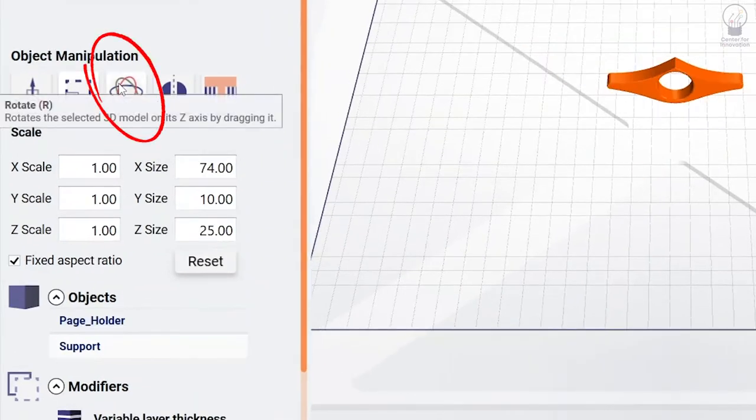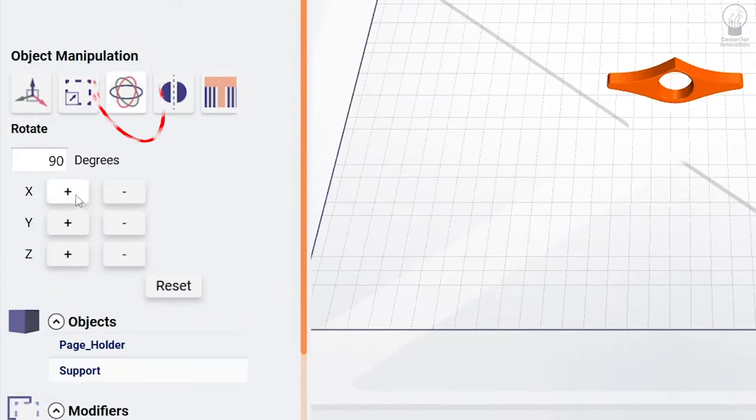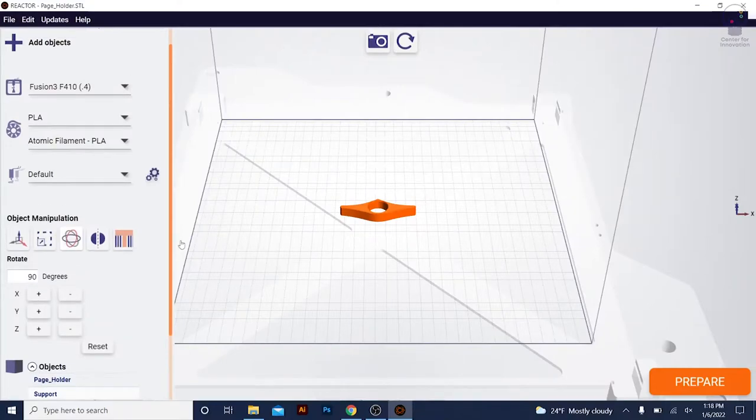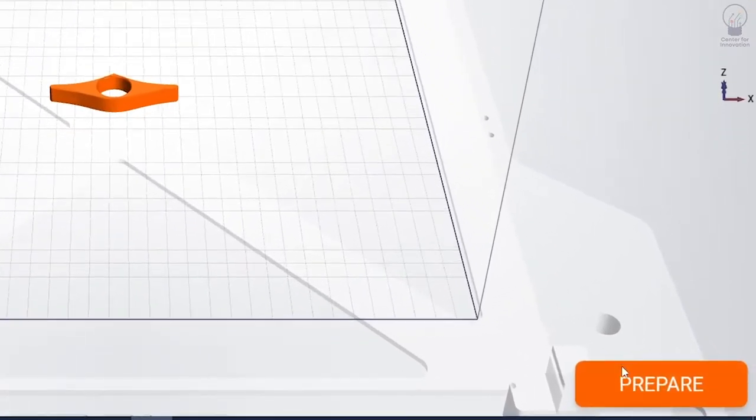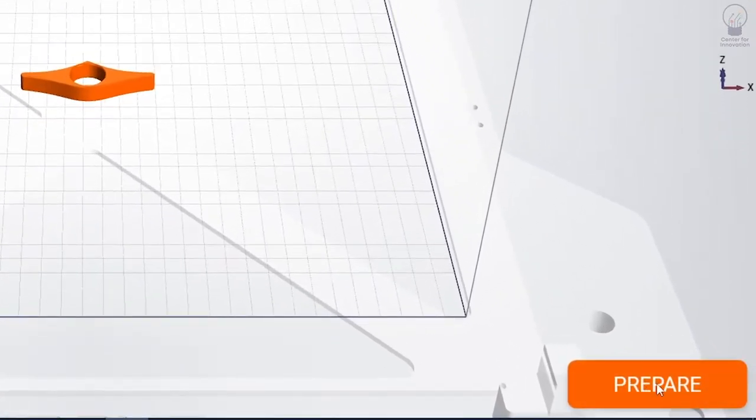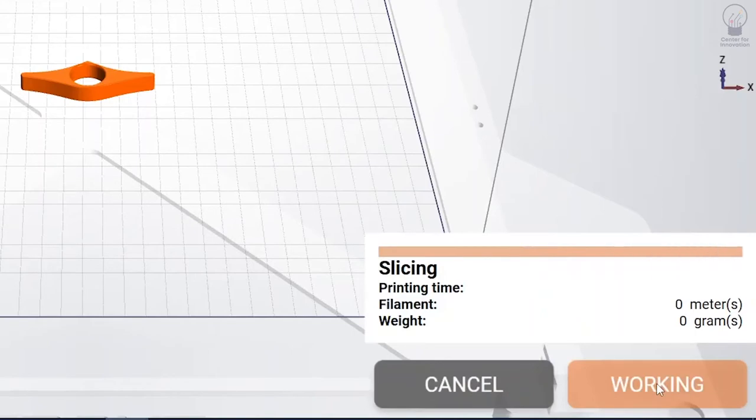To rotate the object, press the Rotate button and use the plus or minus buttons to flip the object along the different axes. Once the object is adjusted to your liking, press the Prepare button on the bottom right corner to slice the object.